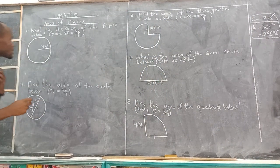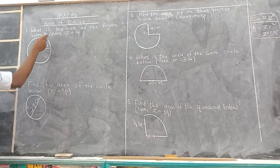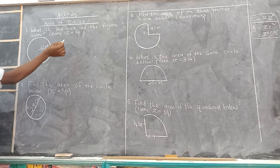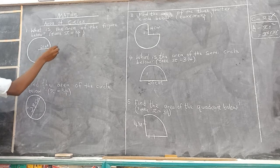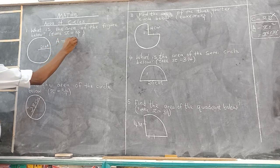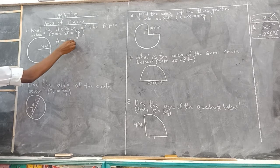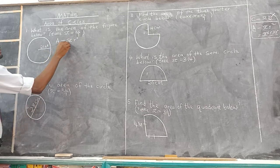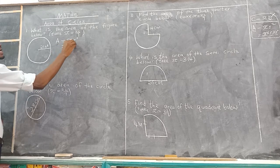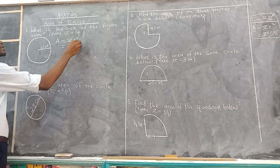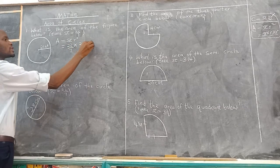Let's go to our examples. Example number one: what is the area of the figure below? Take pi as 22 over 7. So the first thing is you say area of a circle is equal to pi r squared, meaning pi times r times r. R standing for radius. So pi is 22 over 7, and the radius is the length from the center of the circle until you touch the circumference. So you multiply by 21 times 21.